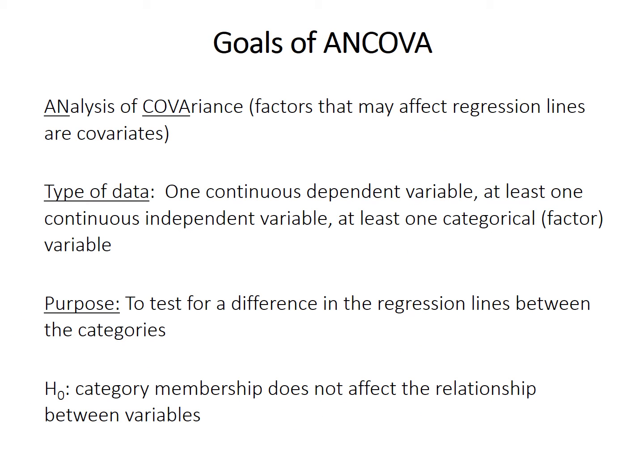ANCOVA requires one continuous dependent variable, at least one continuous independent variable as in linear regression, and the data must be divided into categories with at least one categorical factor variable. Its purpose is to test for a difference in the regression relationship — either in slope or intercept — between the levels of the factor variable. The null hypothesis is that category membership doesn't matter and that the regression slope and intercept are the same across groups.